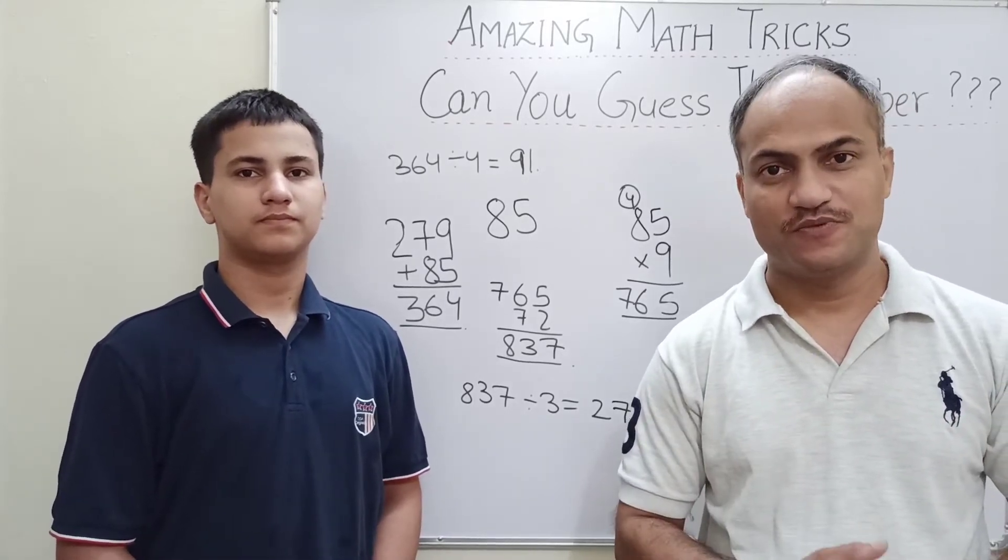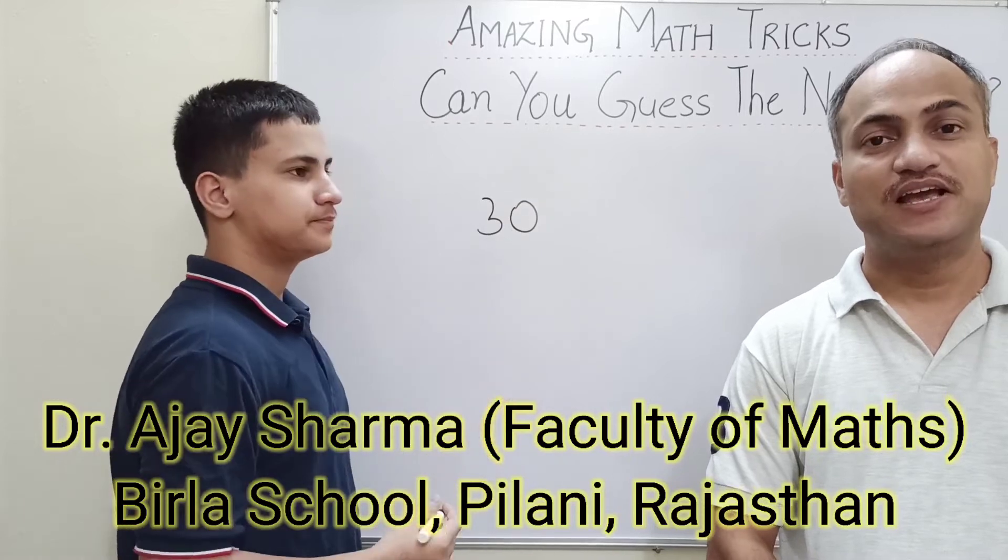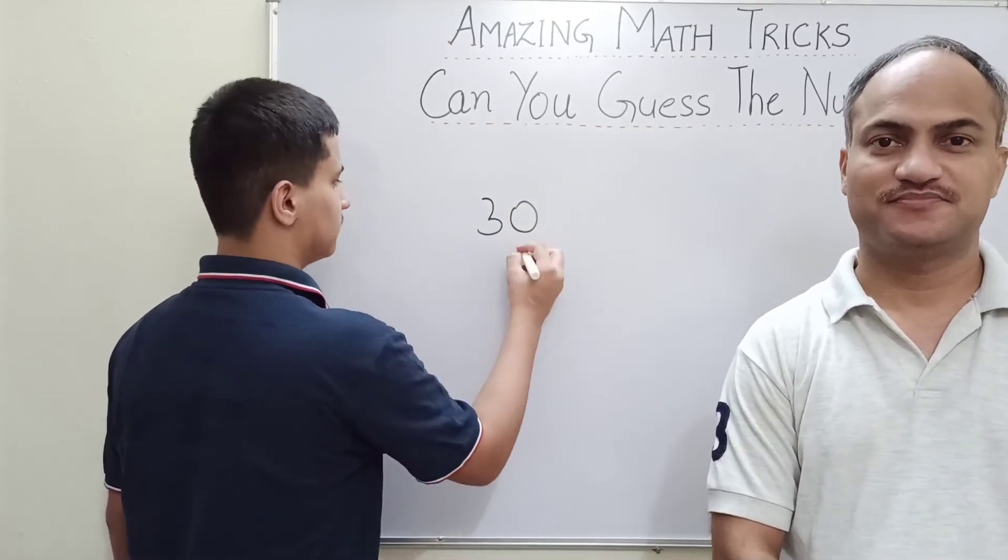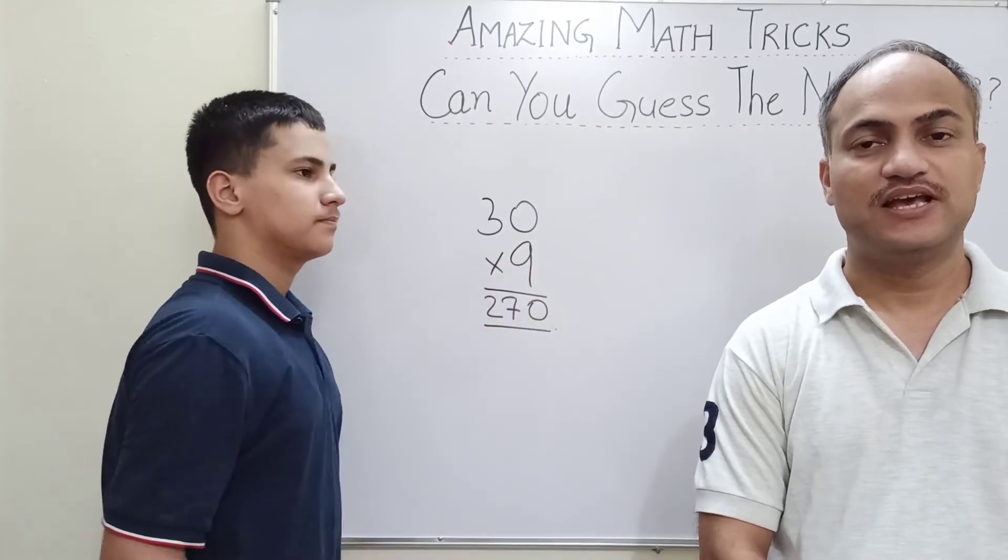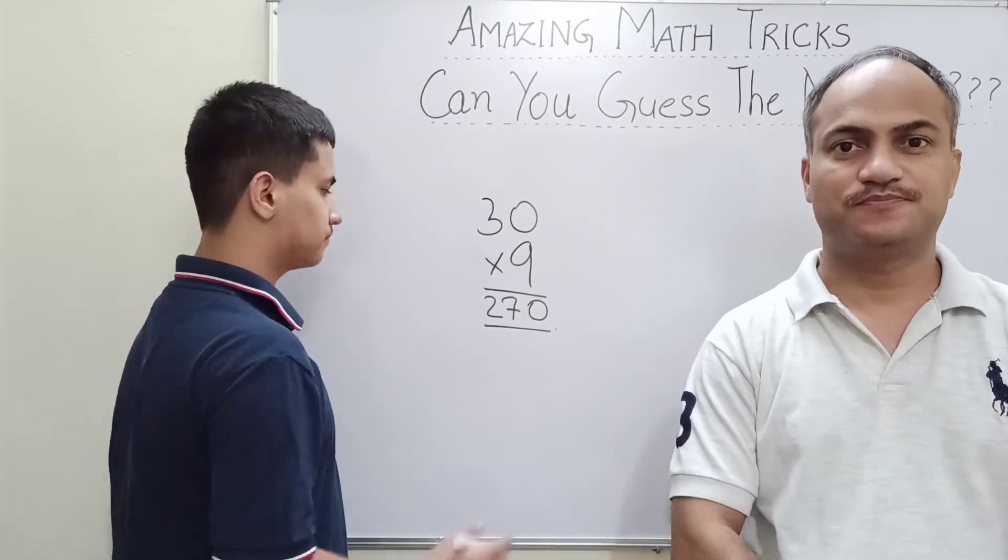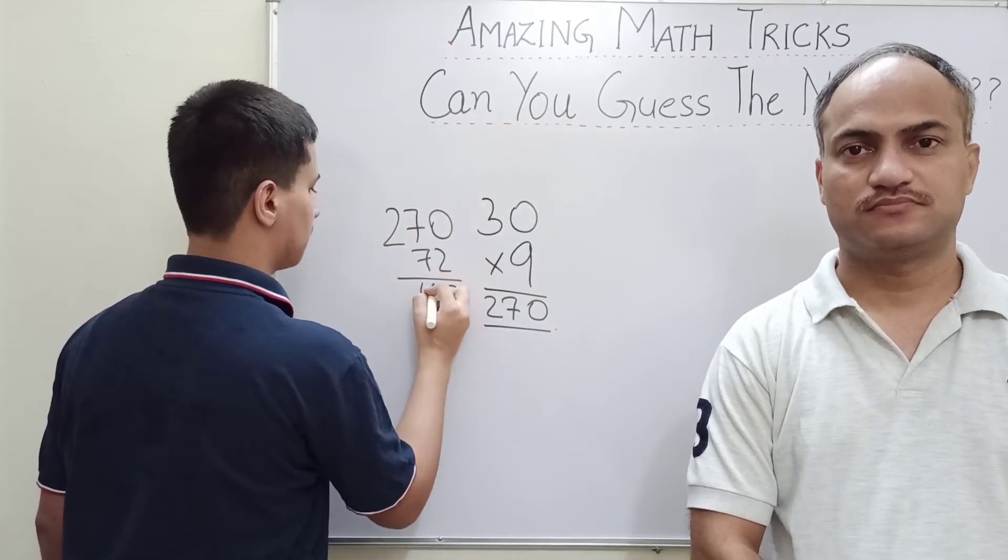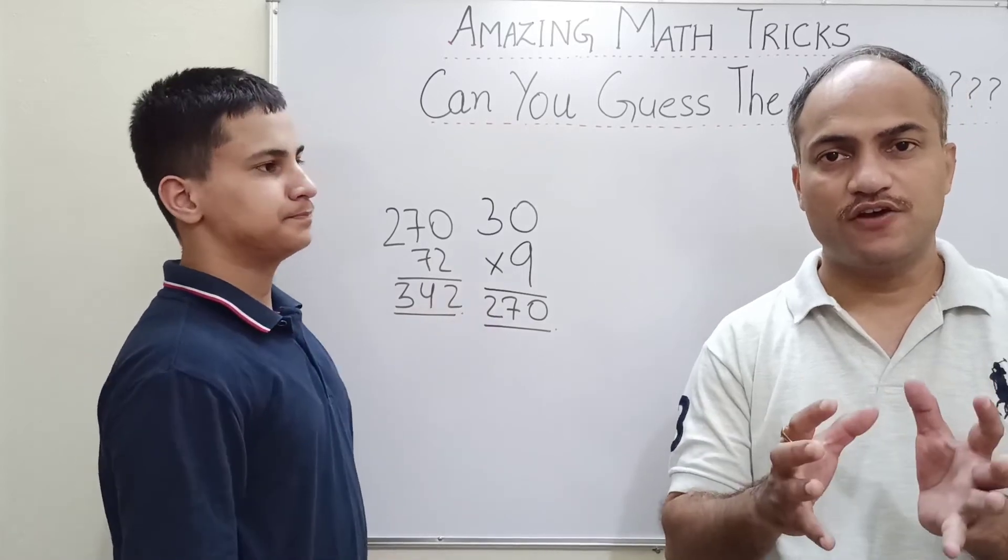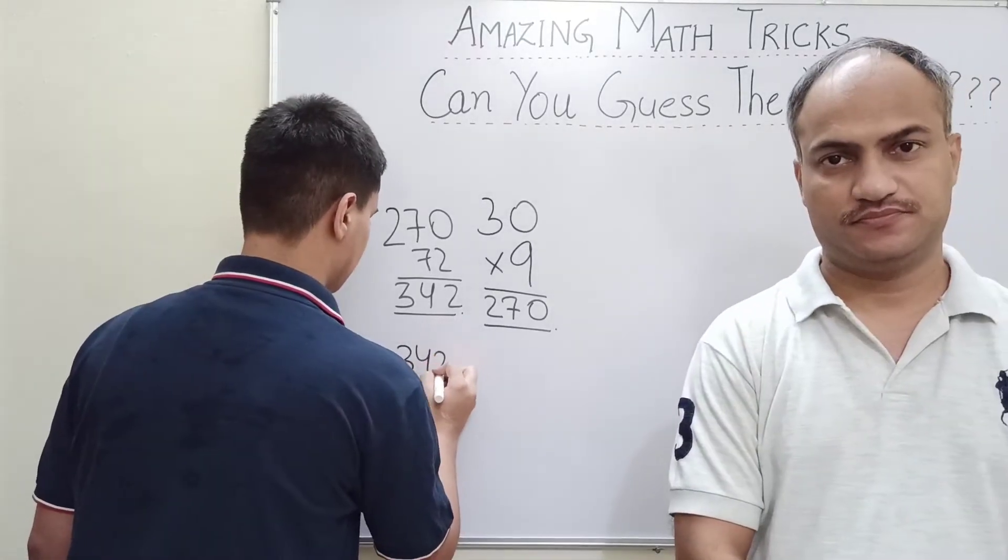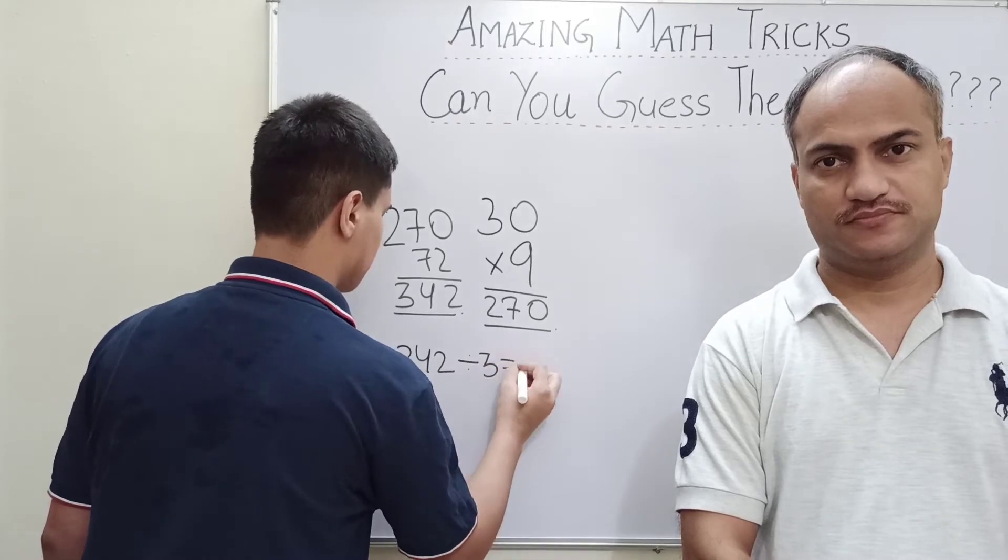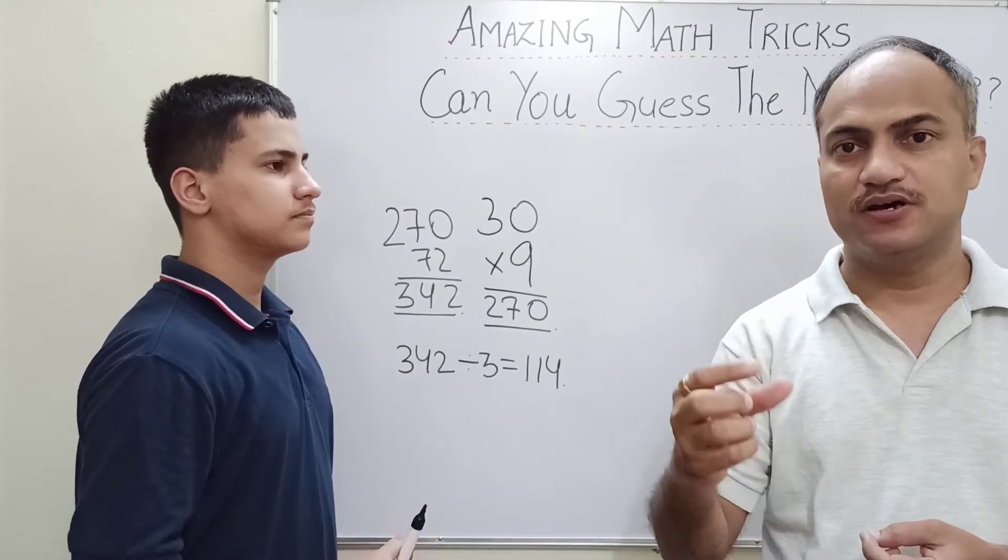Write any number on the board. Multiply the number by 9. Now add 72 in the final answer. Whatever you have got, now in that you divide by 3. Whatever you thought initially, add that number in your answer now.